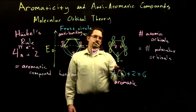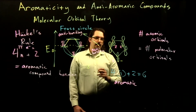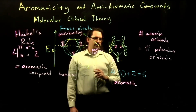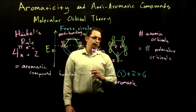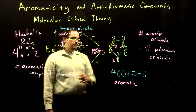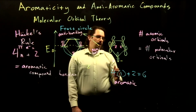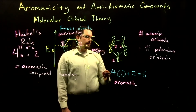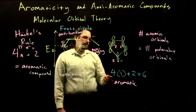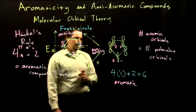So as long as we have sp2 hybridized carbons in our ring system, we have the potential for an aromatic structure. We can even consider a carbocation that could be aromatic if it has the right number of electrons, though in that case we would end up with only four electrons instead of the six needed to be aromatic.